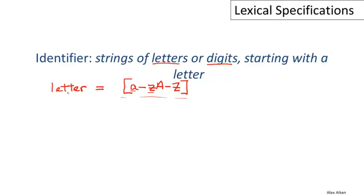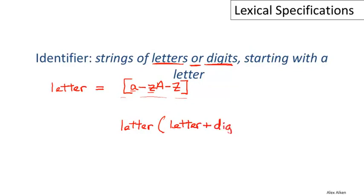That gives us a definition of a single letter. We already have a definition for digit, and now we have a definition for letter. So we can write out the rest of this definition. An identifier always begins with a letter, and after that it's allowed to be a string of letters or digits. The 'or' suggests a union: after the first letter, we can have either a letter or a digit, and then an arbitrary string of those things — so we put a star on the whole thing. That is the definition of an identifier: it begins with a single letter, followed by zero or more letters and digits.